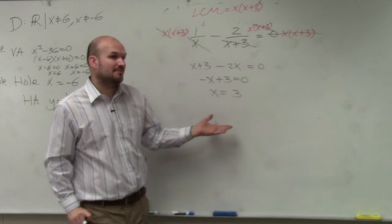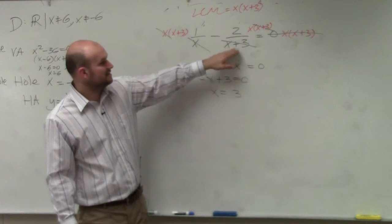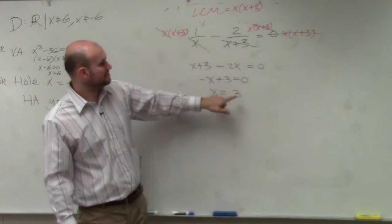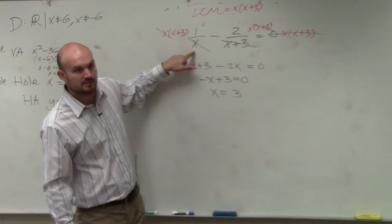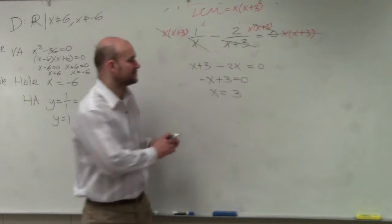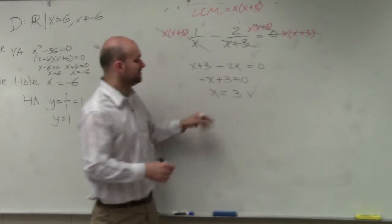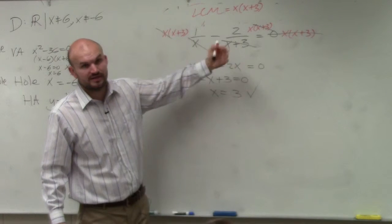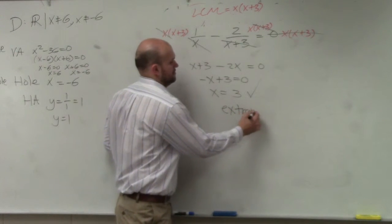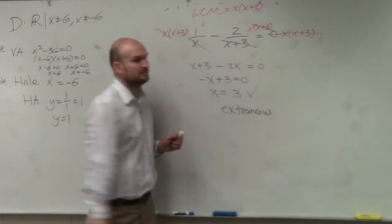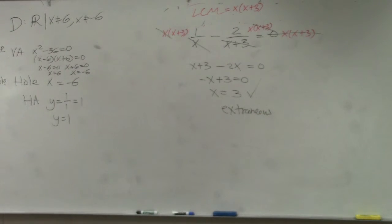Then the last thing we want to make sure we do is take our solution and plug it back in to make sure it doesn't make our denominator 0. So when we plug 3 in for x, does it make our denominator equal to 0? No. So that answer is good. If by plugging 3 back into the equation does make it 0, it's called extraneous. But that does not happen in this case.